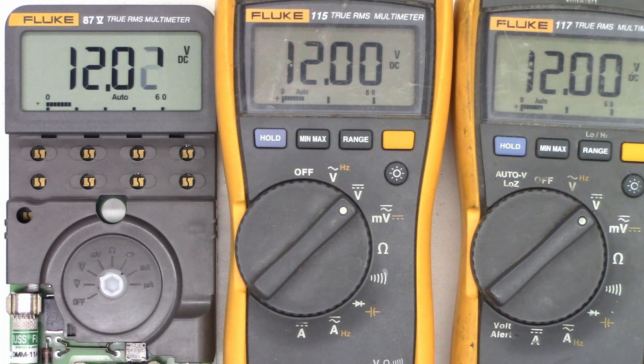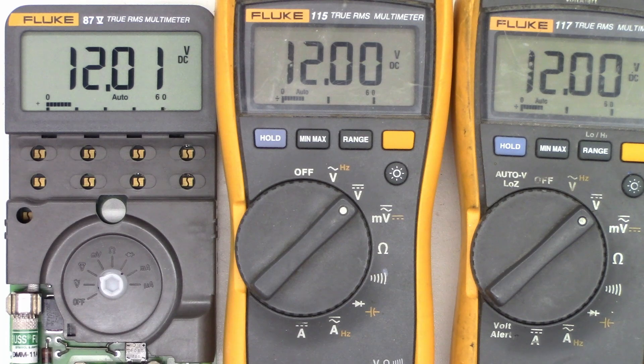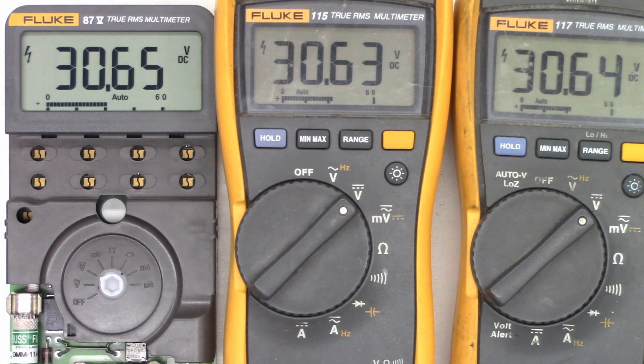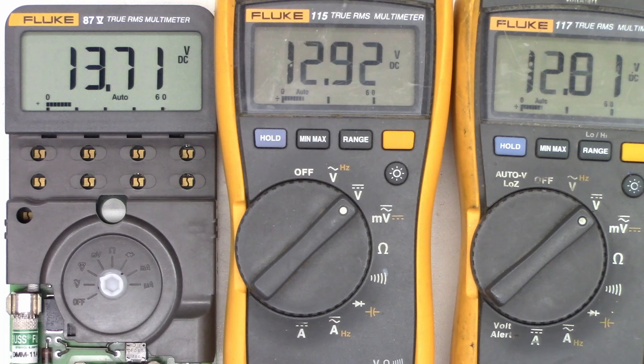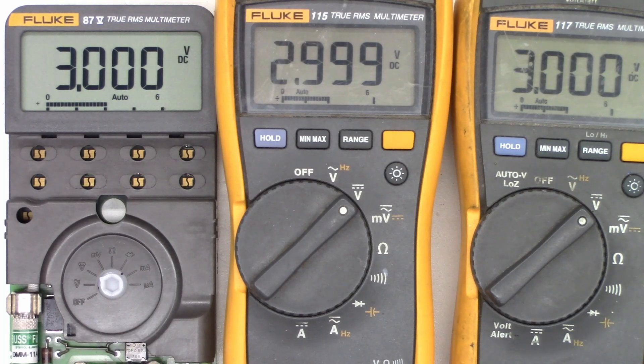I went ahead and tested the AC as well. It seems to be pretty doggone close with the other ones. I'll go ahead and put that up too. So here's some different voltages across the spectrum. 30 volts, it's to within one or two one hundredths. Let's dial it down to about three volts and see what we get here. Wow, almost perfect, within one one hundredth of a volt of the other meters.